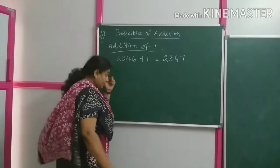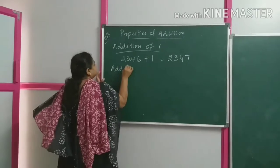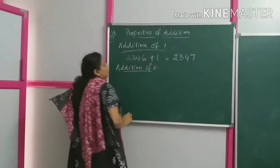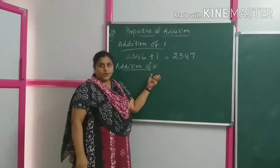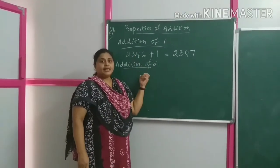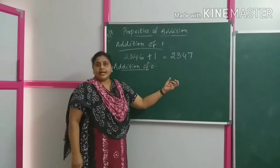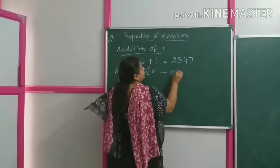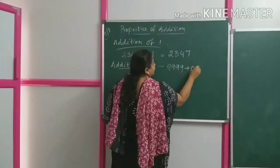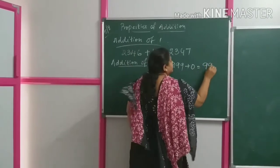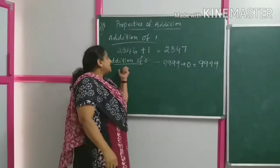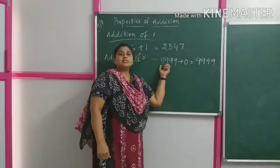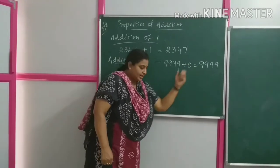The second property is addition of zero. On adding zero to any number, you get back the same number. For example, 9999 plus zero gives you back the same number 9999. Addition of zero means: on adding any number to zero, the answer is the number itself.